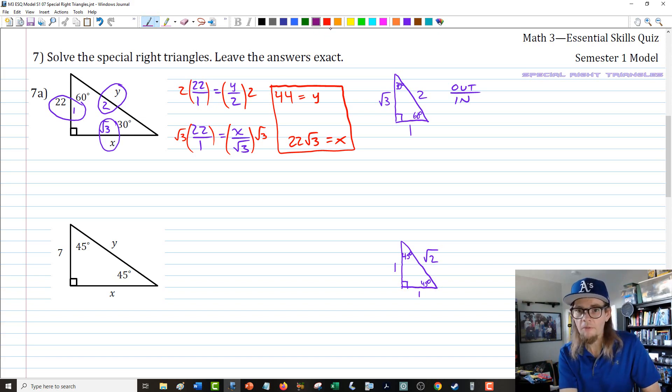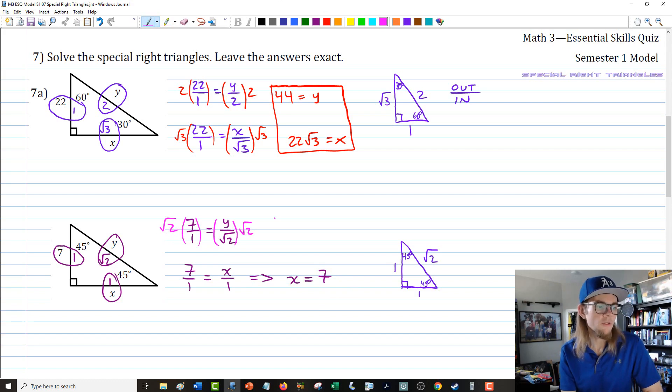For the 45-45-90 triangle, we'll do exactly the same thing, just with the 45-45-90 ratios. We have opposite the 45s we're going to have 1s, and then the hypotenuse will be root 2. We'll set up proportions with those two parts: 7 over 1 equals y over root 2, and 7 over 1 equals x over 1. The second one is trivial, so x equals 7. On the first one, we'll multiply both sides by root 2, and y equals 7 square root of 2. We've found the missing side lengths.